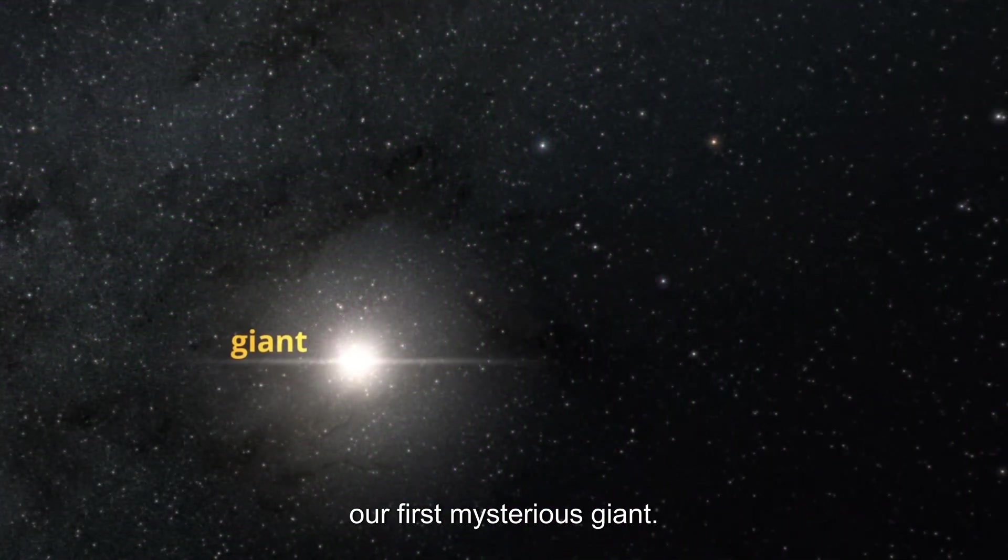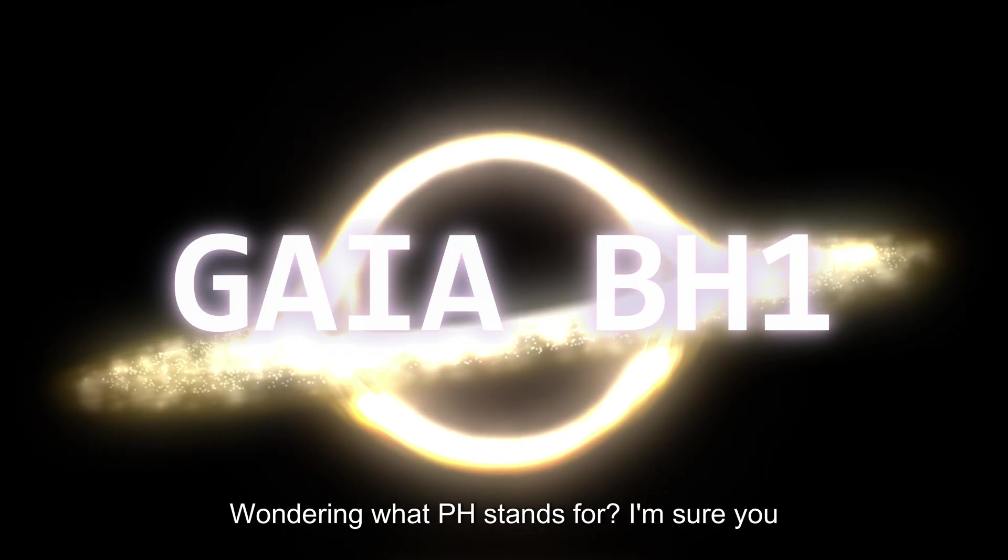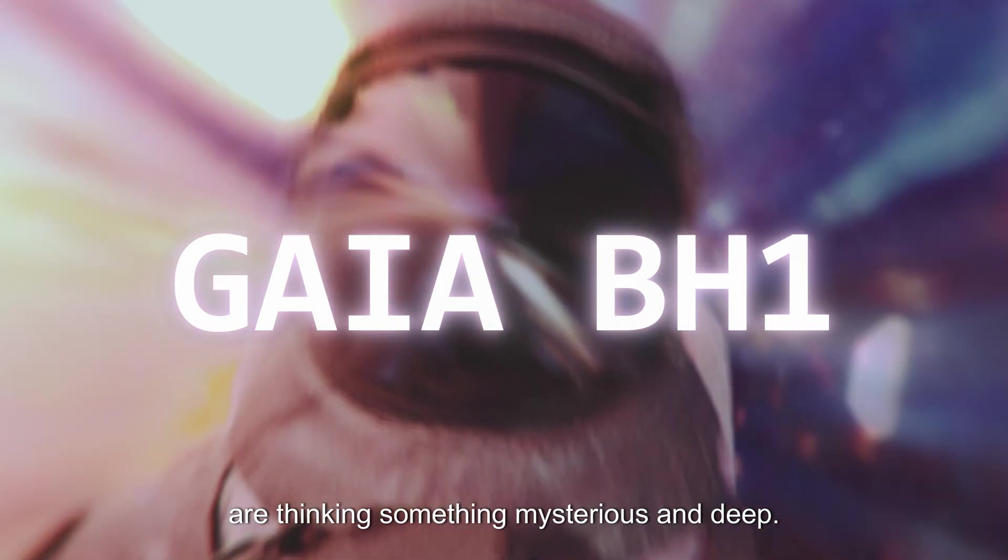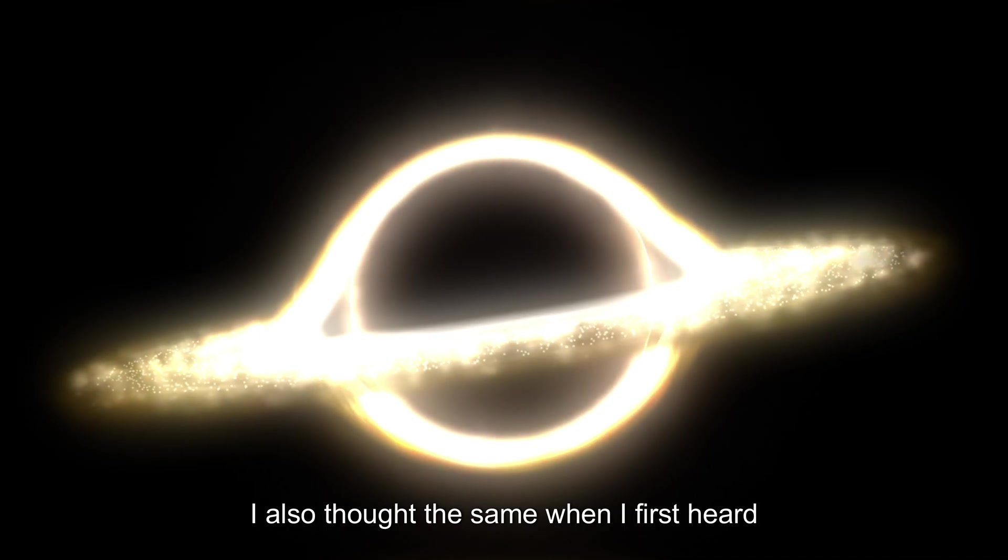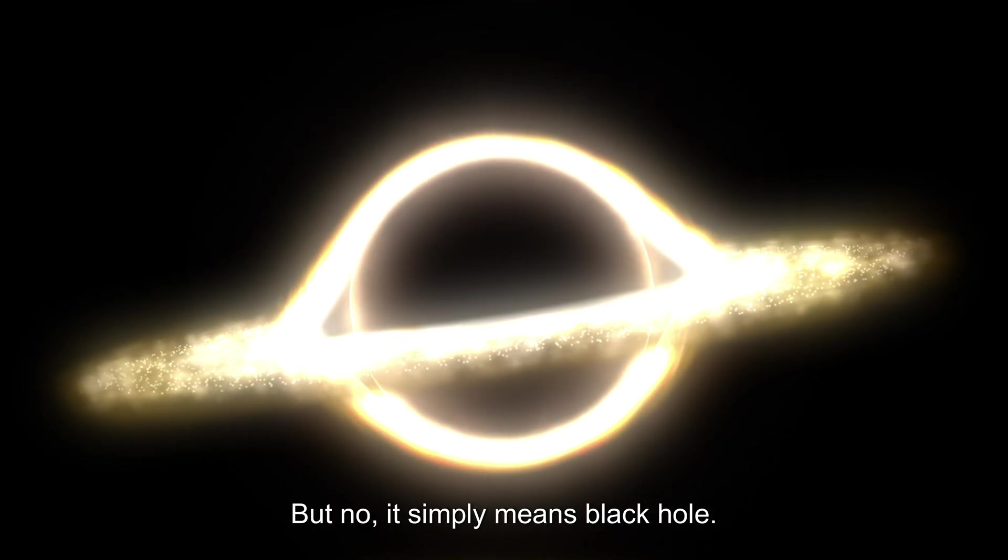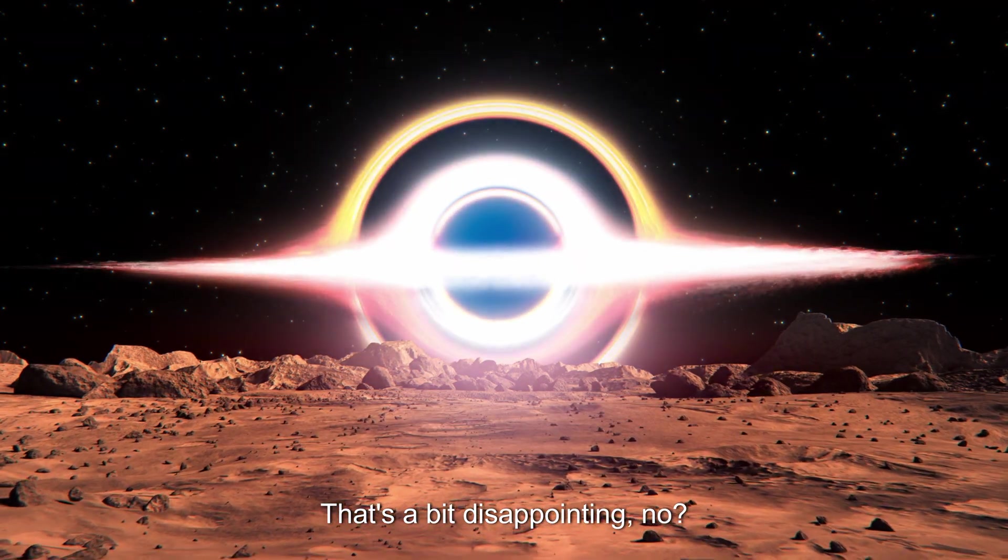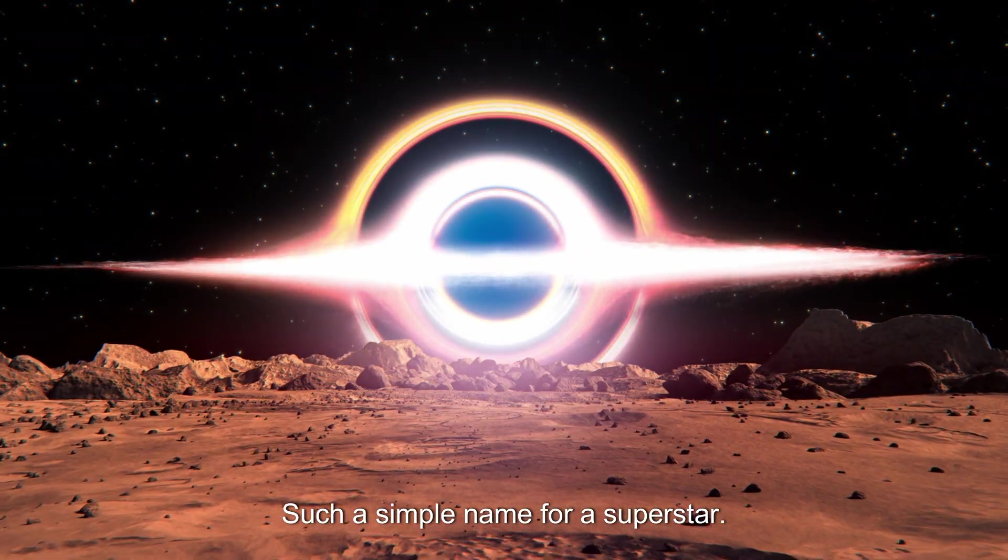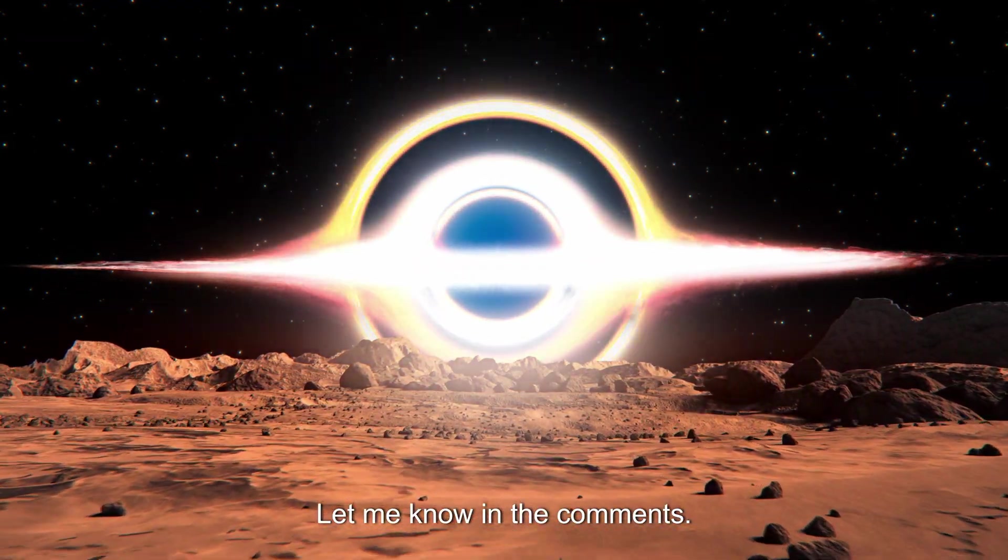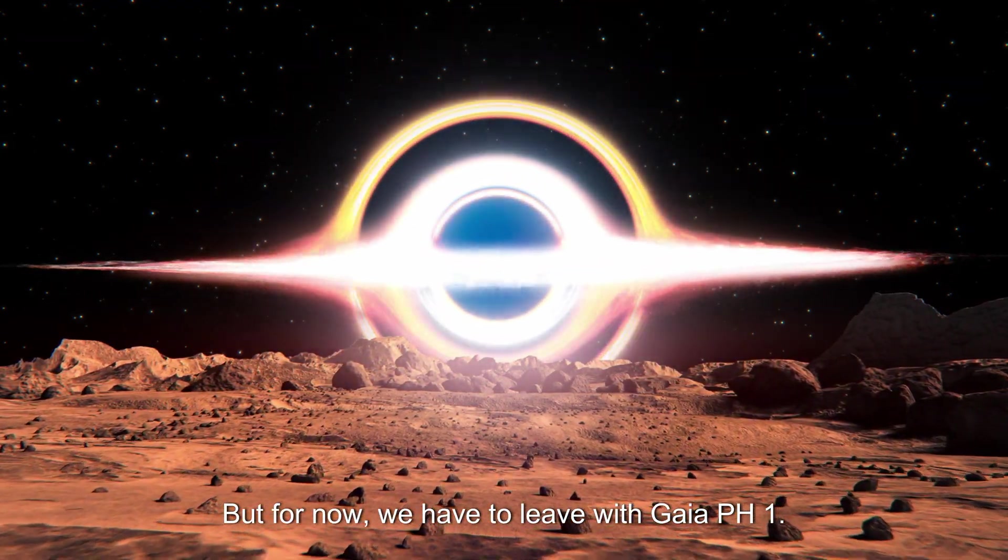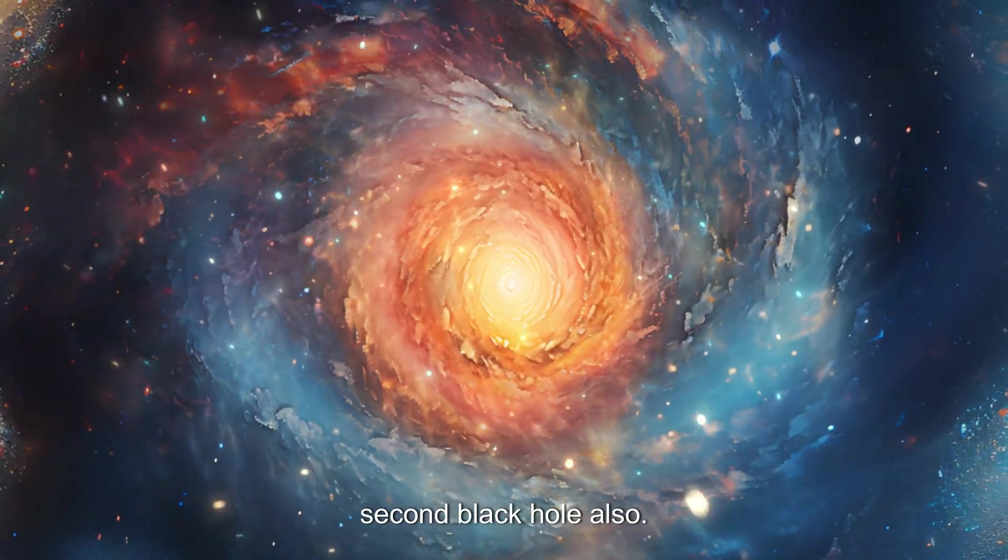Now let's move to our second black hole. Oh wait, I haven't told you the name of our first mysterious giant yet! It's called Gaia BH1. Wondering what BH stands for? I'm sure you're thinking something mysterious and deep. I also thought the same when I first heard about it, but no—it simply means black hole. Yeah, Gaia Black Hole 1. That's a bit disappointing, no? Such a simple name for a superstar. Can you think of something better? Let me know in the comments.